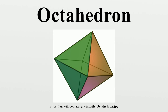This is done by first placing vectors along the octahedron's edges such that each face is bounded by a cycle, then similarly partitioning each edge into the golden mean along the direction of its vector. There are five octahedra that define any given icosahedron in this fashion, and together they define a regular compound.